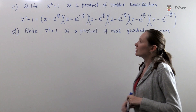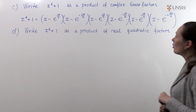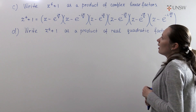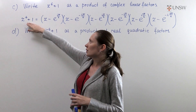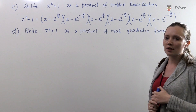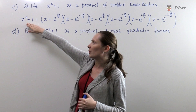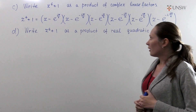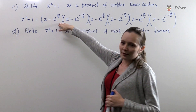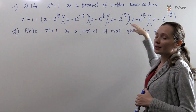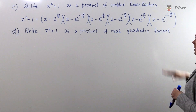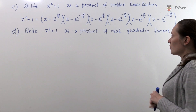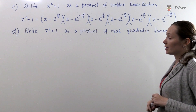For part c we need to write this polynomial as a product of complex linear factors. To do this we will use the factor theorem. So we need to have all roots of the equation where this polynomial equals 0, and write down the factors in the form z minus the first root, z minus the second root, and so on. This will be the product of complex linear factors because we have complex numbers in each factor.